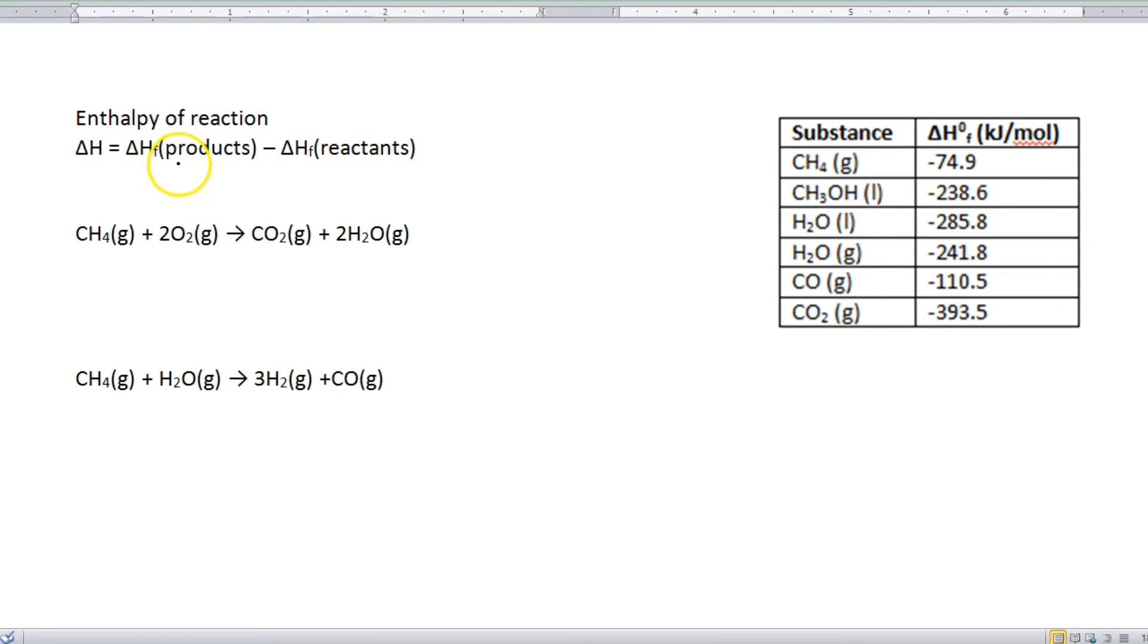Now before we actually start calculating anything, I want to remind you of the endothermic and exothermic graphs that we looked at in a previous video. Endothermic reactions have a positive delta H, and exothermic reactions have a negative delta H. So please keep that in mind as we do this calculation.